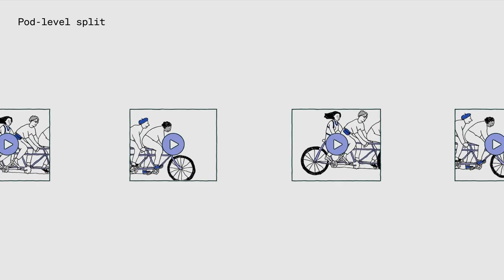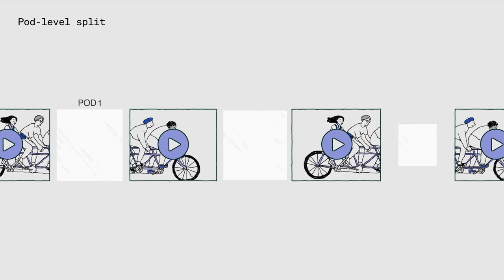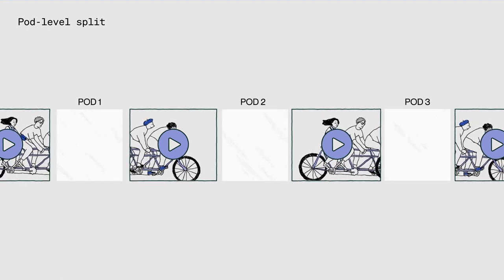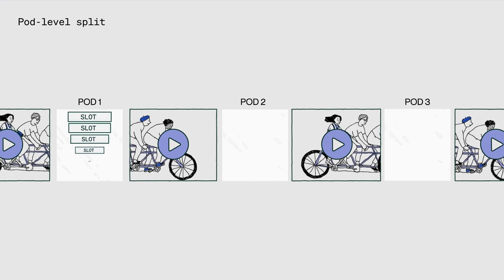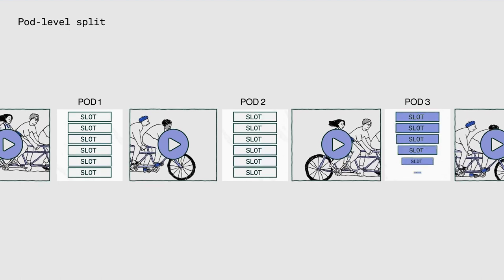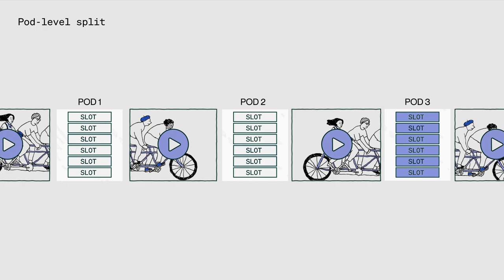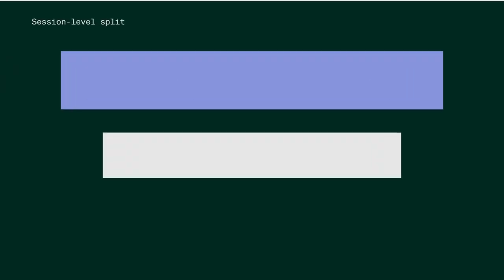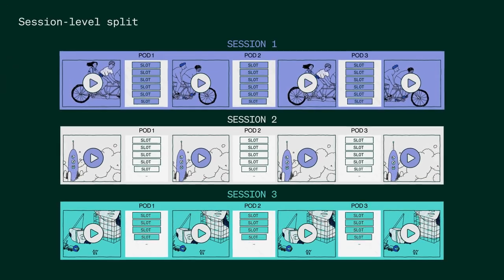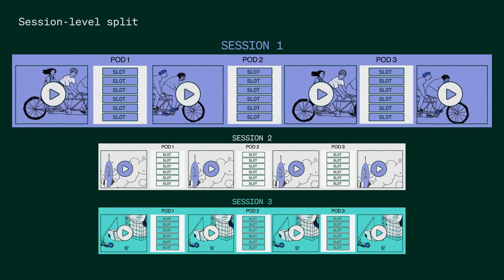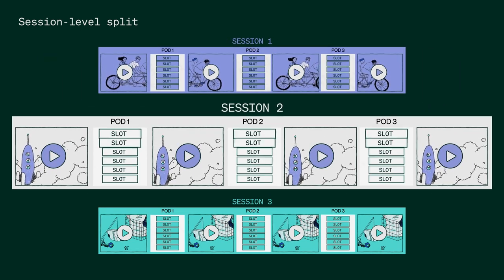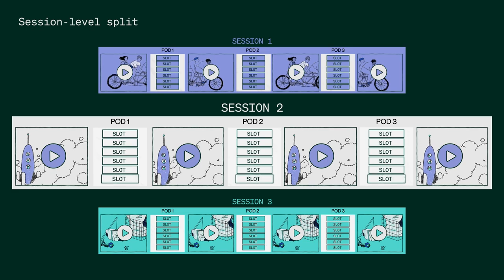The second type of inventory split happens on a pod basis. For example, a media owner may retain rights to the first and second pod of the streaming session, whereas the app owner has rights to the subsequent pods. And lastly, inventory can be split by streaming session, where one entity has inventory rights and is responsible for all the ad pods within a streaming session.